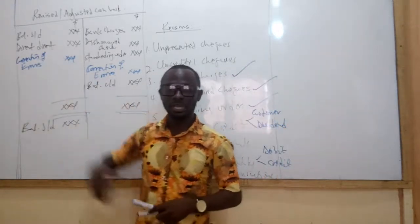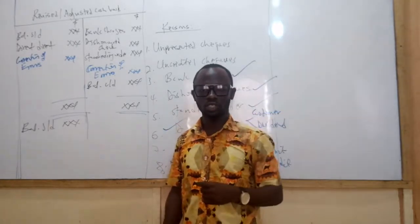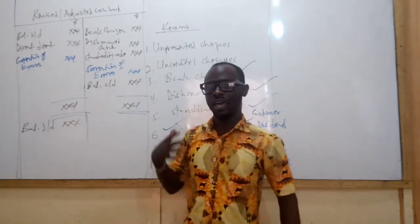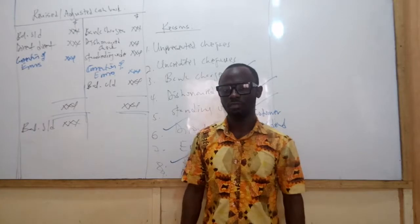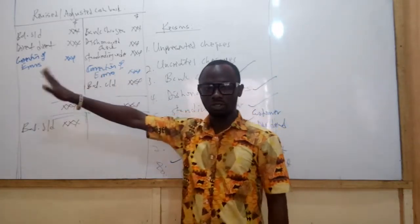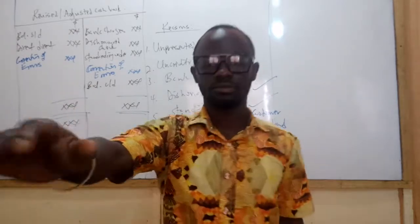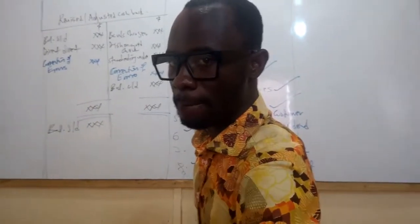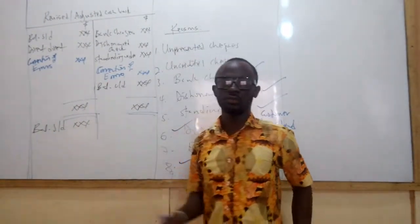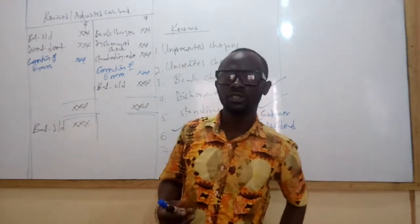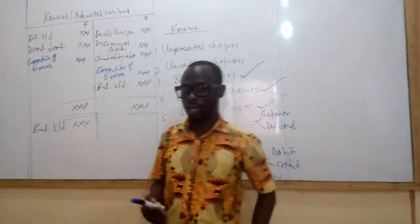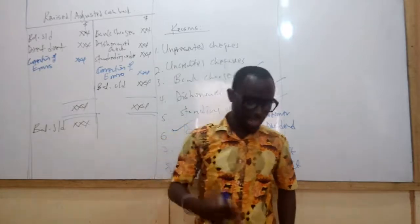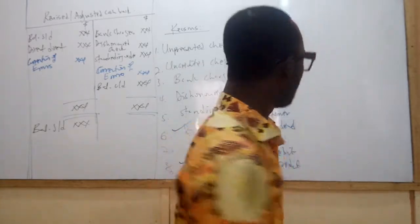Direct credit can be a customer making direct payments into our account, or us as a business receiving dividend or interest on investments. When we finish preparing the revised cash book, we are then in a position to prepare the bank reconciliation statement.